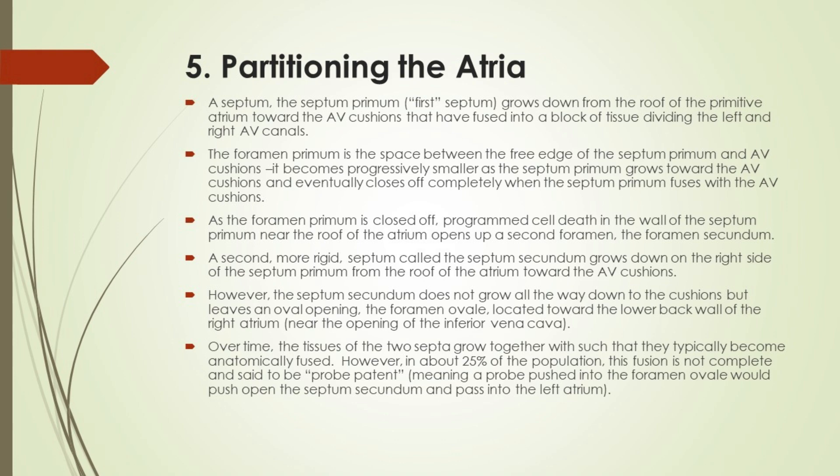A second, more rigid septum called the septum secundum grows down on the right side of the septum primum from the roof of the atrium toward the AV cushions. However, the septum secundum does not grow all the way down to the cushions but leaves an oval opening — the foramen ovale — located toward the lower back wall of the right atrium, near the opening of the inferior vena cava. Over time, the tissues of the two septa grow together such that they typically become anatomically fused. However, in about 25% of the population, this fusion is not complete and is said to be patent, meaning a probe pushed into the foramen ovale would push open the septum secundum and pass into the left atrium.